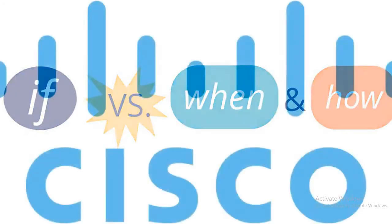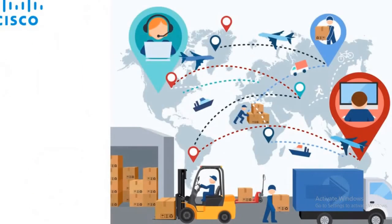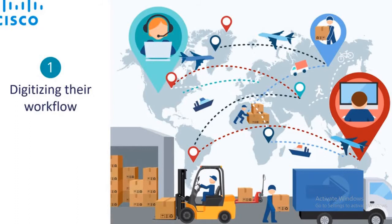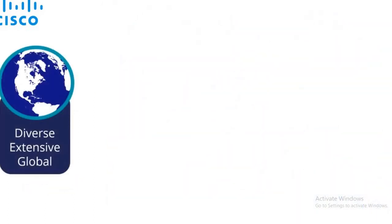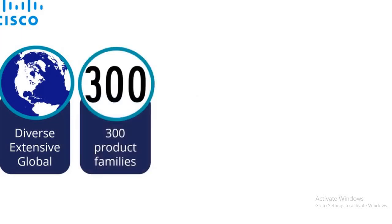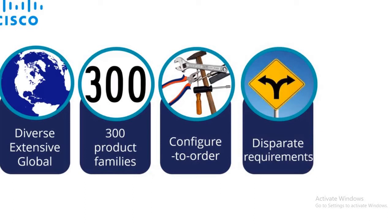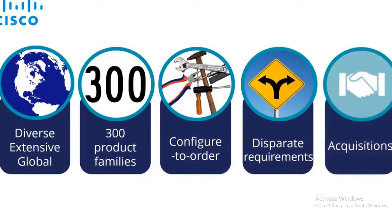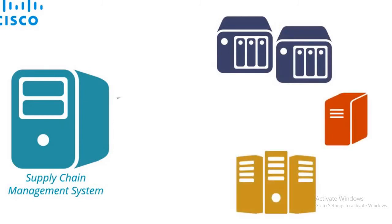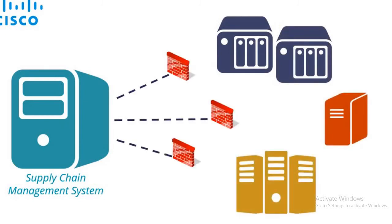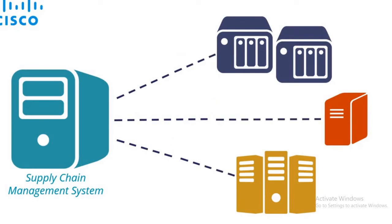One customer example to demonstrate the change from Waterfall to Agile with Pega is Cisco. Cisco's supply chain team was tasked with digitizing their workflow and introducing analytics to simplify their processes. The Cisco supply chain is highly diverse, extensive, and global, containing more than 300 product families. Most Cisco products use a configure-to-order production model, and customers have vastly different expectations and fulfillment requirements. A large percentage of Cisco's growth comes through acquisitions, bringing their own supply chain requirements and processes that need to be integrated into Cisco's core operations. Cisco had a highly customized supply chain management system that could not integrate with these multiple operation systems and ERP systems, especially since they had redundant, non-standardized processes.